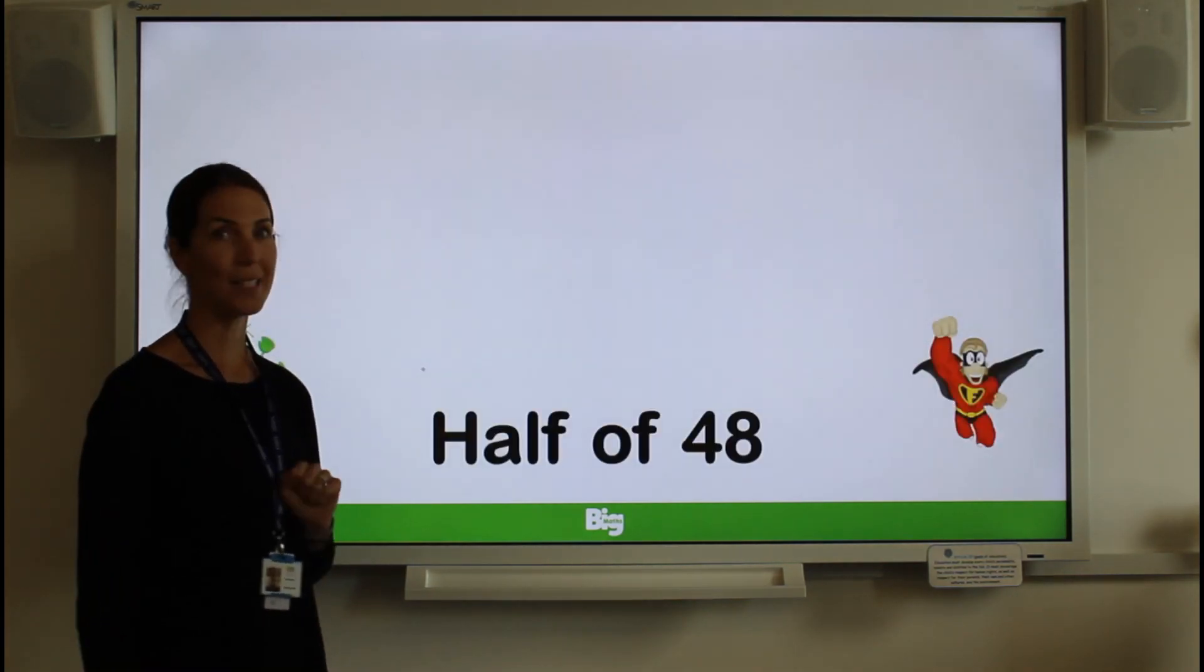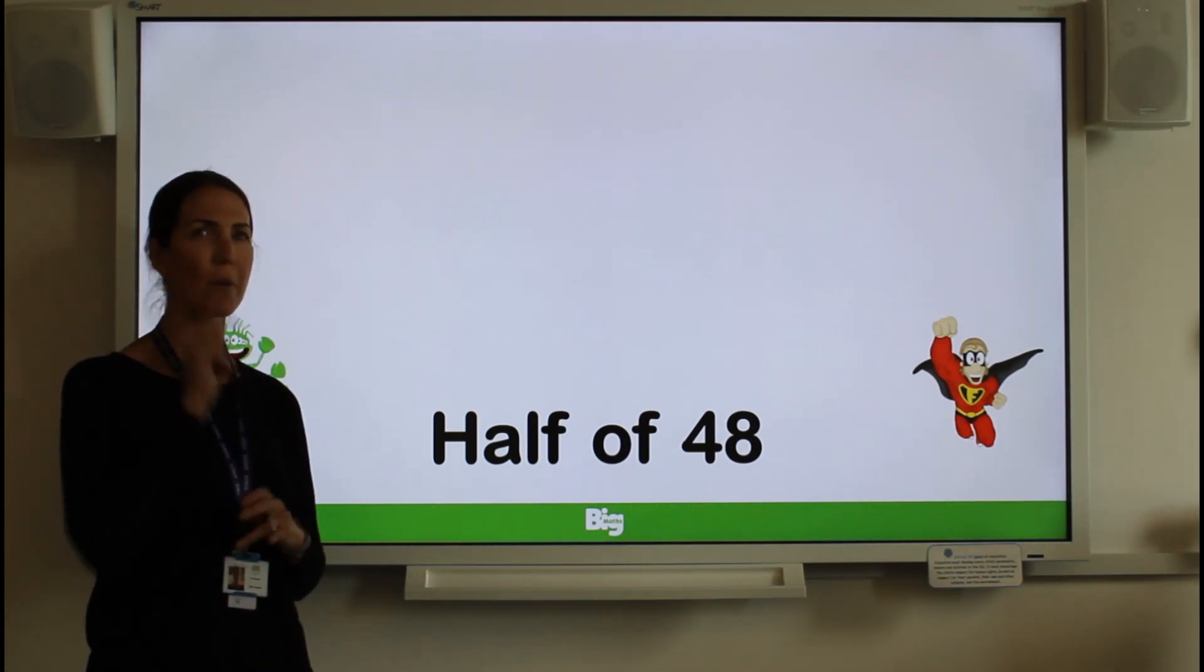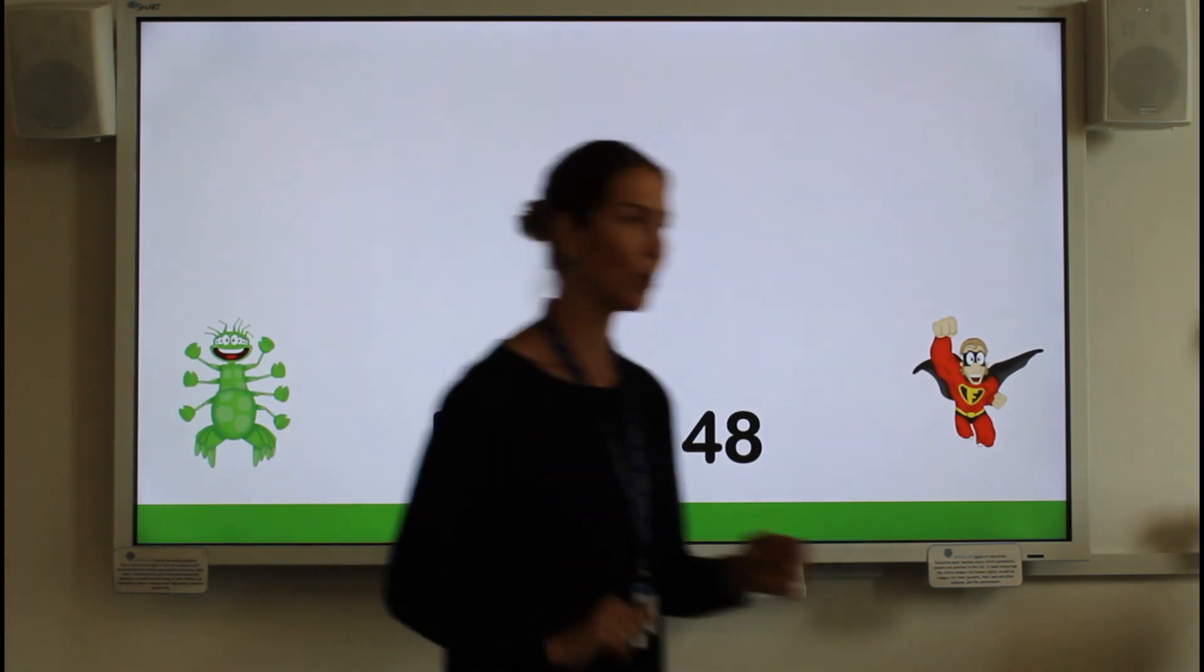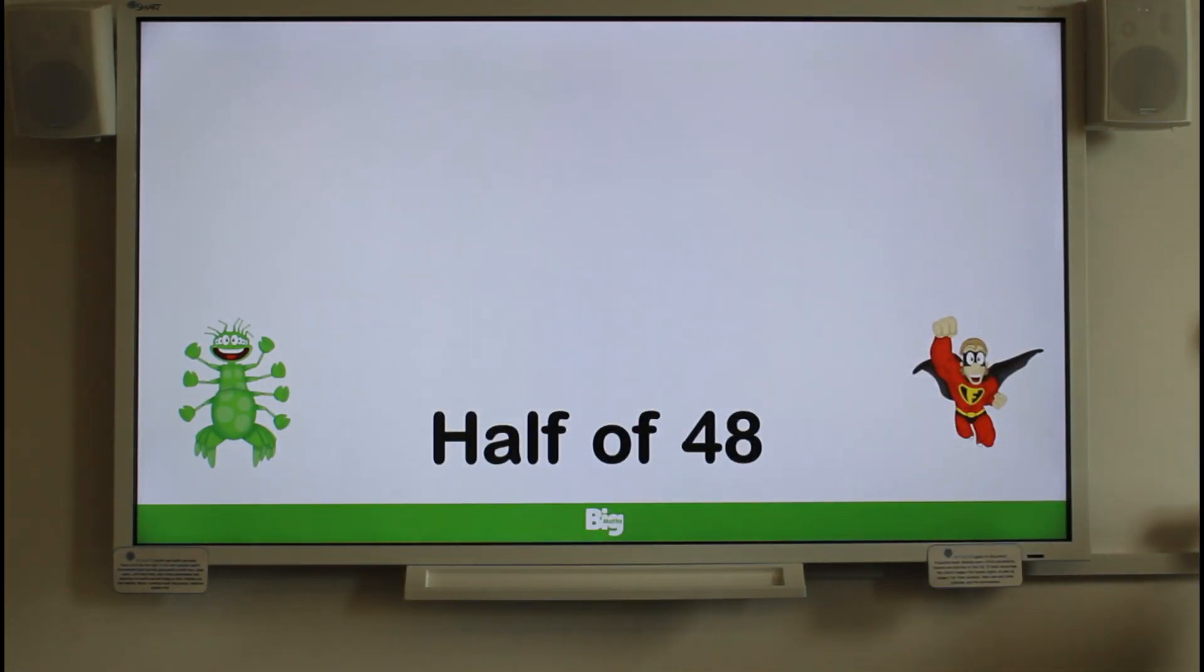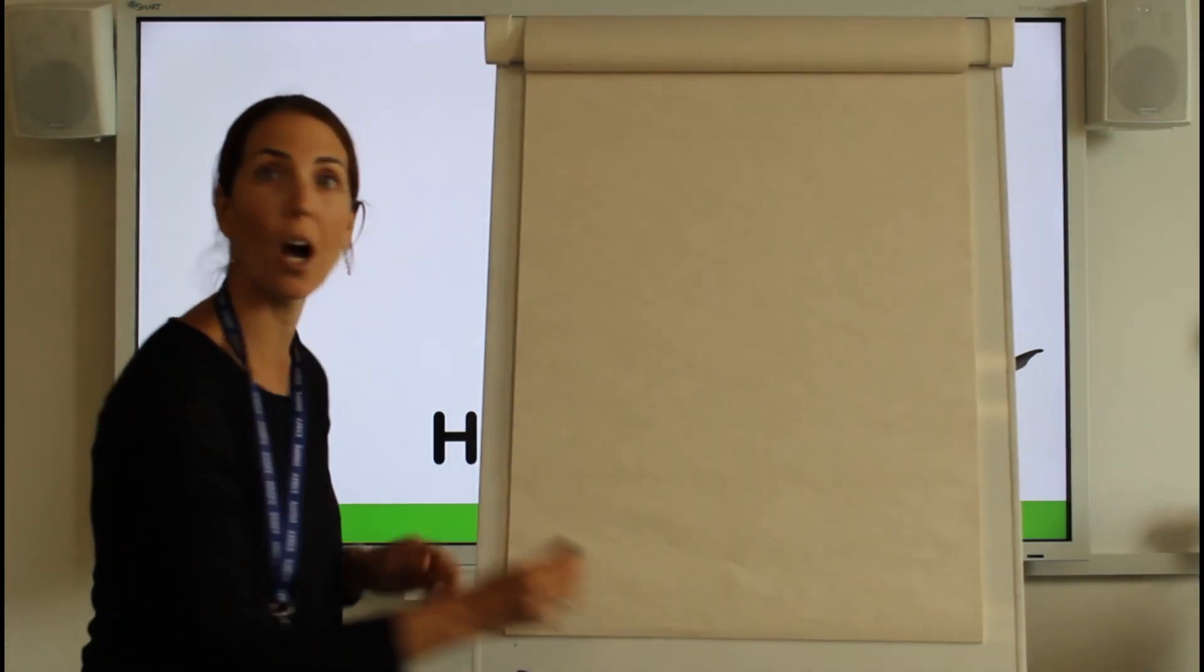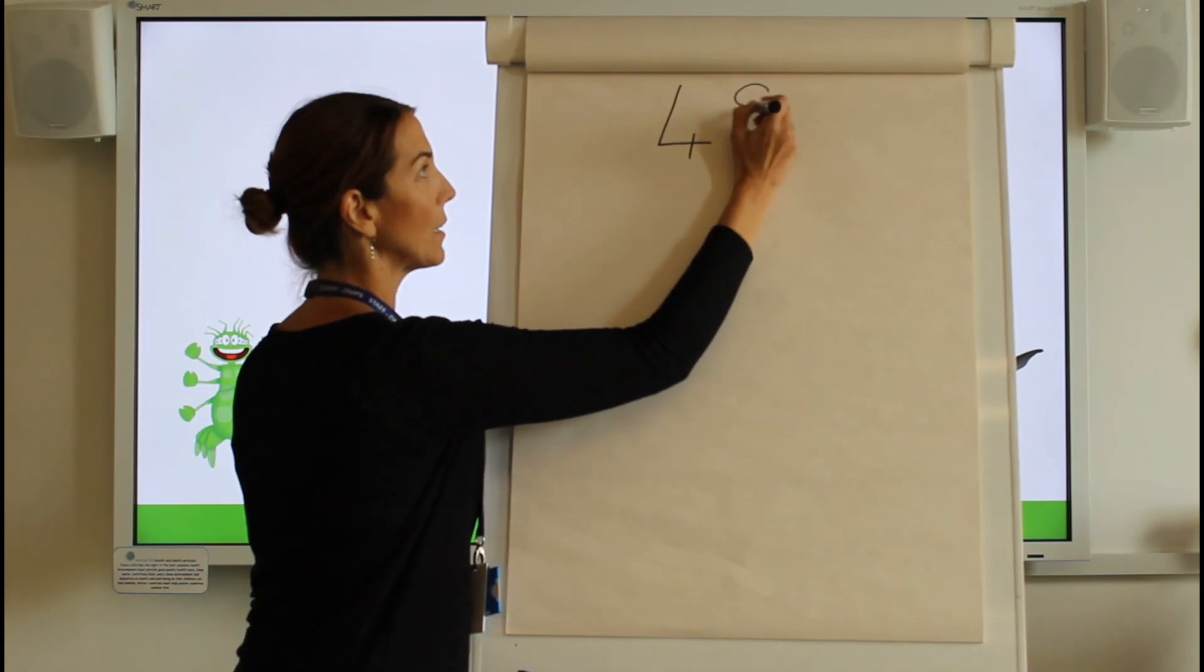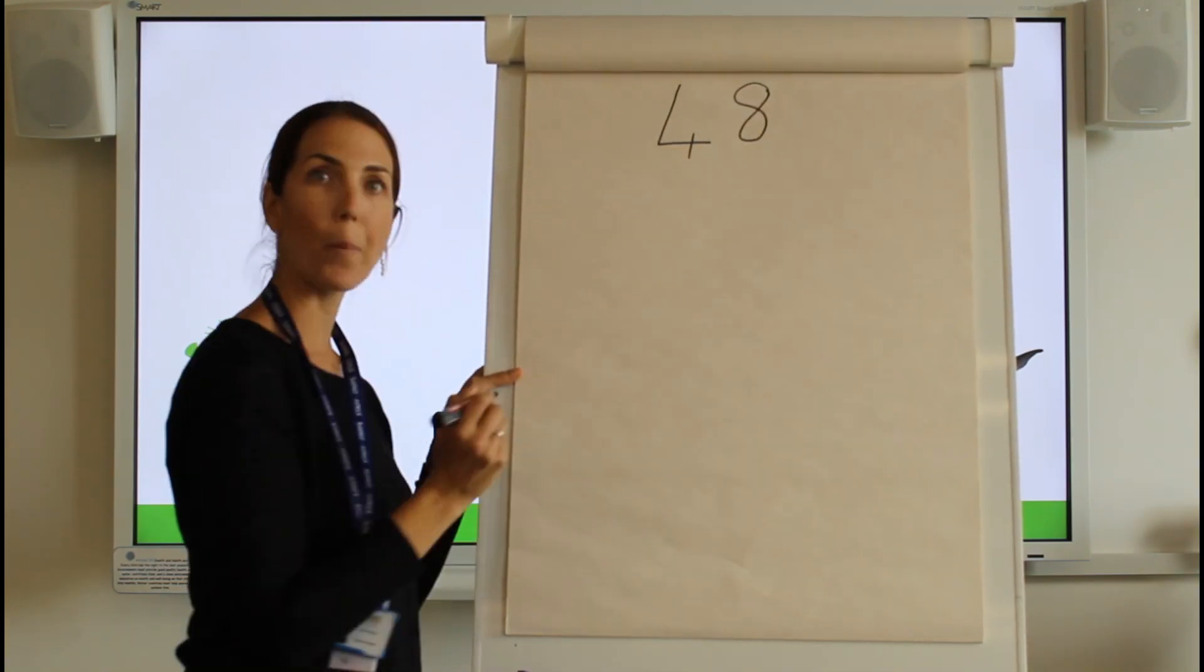Let's go. Now, this time, we're not going to show our remember twos. We're going to try and remember what we need to do. Have a look on my piece of paper. So, they've asked me to work out half of 48. I'm going to start with my 48 at the top.